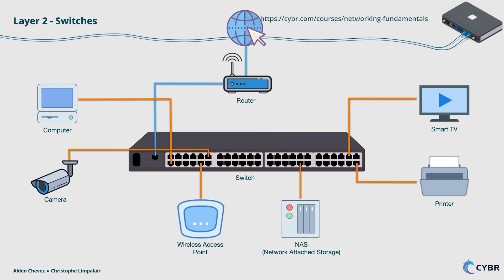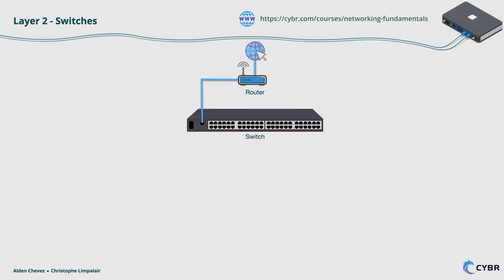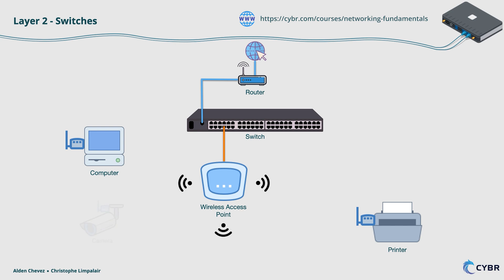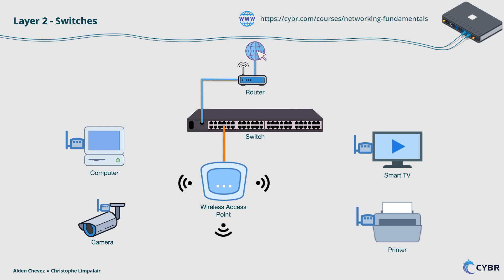Wireless access points connect directly to a switch, but these access points will also be working as a switch, since they do have their own MAC address, and they use both source and destination MAC addresses. A difference between them and a switch is that wireless access points let devices connect via wireless instead of ethernet.